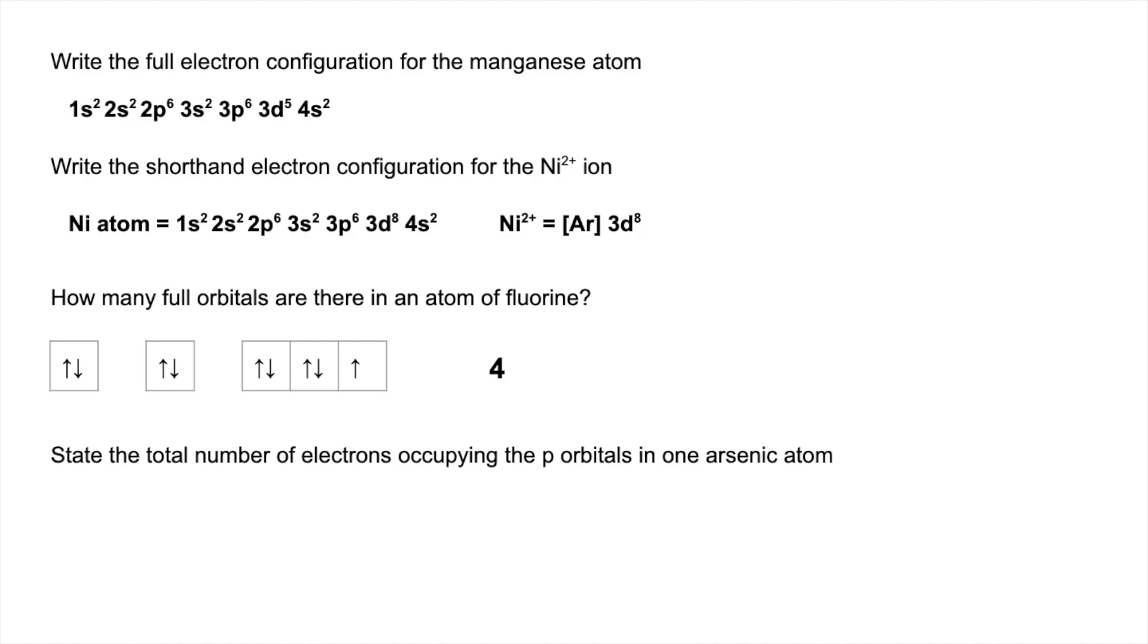And then finally, the total number of electrons occupying the p orbitals in an arsenic atom. So the way I would tackle this is write the electron configuration of the atom first. And then just count up all the p electrons. So we've got 6 and 6 and 3. So that's a total of 15.